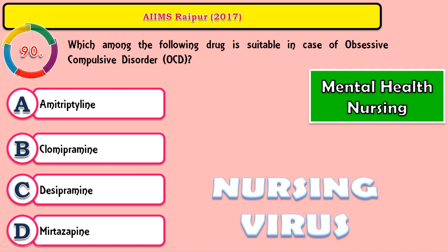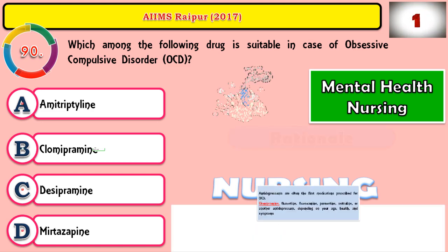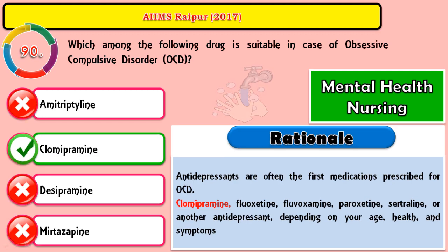Question 90: Which among the following drugs is suitable in case of OCD — obsessive compulsive disorder? The correct answer is clomipramine. Antidepressants are often the first medication prescribed for OCD even if the person does not have depressive symptoms. Clomipramine, fluoxetine, fluvoxamine, paroxetine, or sertraline can be the drug of choice depending on the person's age, health condition, duration, and variation of symptoms.